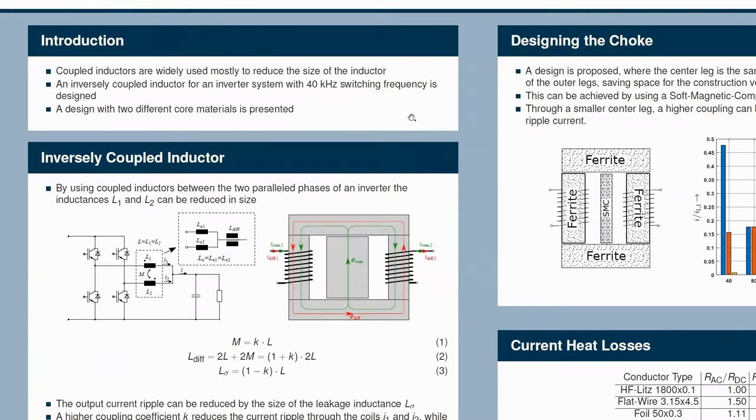Let's zoom in a bit. In this publication, the goal was to reduce the size of the passive component in the inverter while still having acceptable losses. In order to achieve this, a choke with two different core materials has been developed. The design process is shown in the paper.